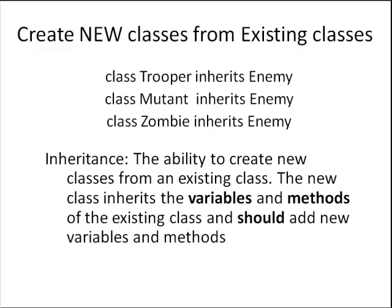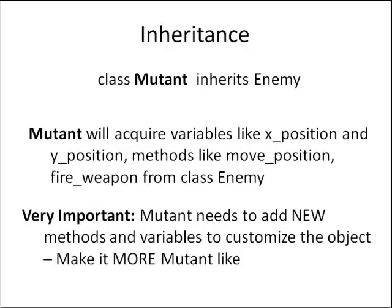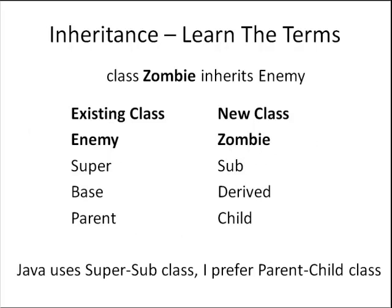The dictionary definition of inheritance is the ability to create new classes from an existing class. The new class inherits the variables and methods of the existing class and may or should add new variables and methods. When the class mutant inherits enemy, mutant will acquire the variables like x and y position and methods like move position and fire weapon. Mutant should then add new methods and variables to customize the object, make it more mutant-like.